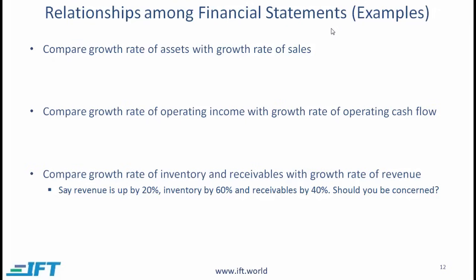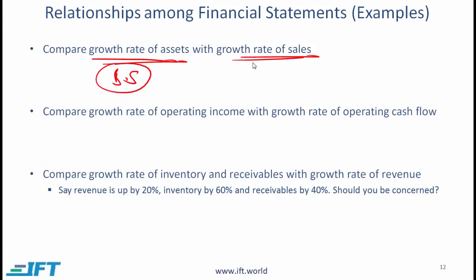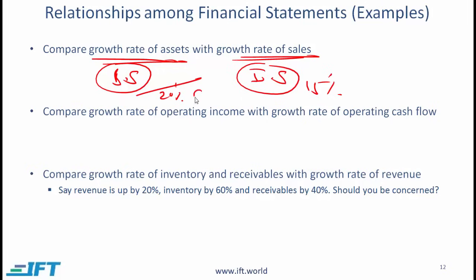Let us briefly talk about the relationships among financial statements. Often it is useful to compare numbers across statements. For example, it is useful to compare the growth rate of assets from the balance sheet with the growth rate of sales from the income statement. If total assets are growing at 20% but sales are growing at only 15%, that is a concern — costs must be going up approximately 20% while sales are only growing 15%, which is something an analyst would have to investigate.